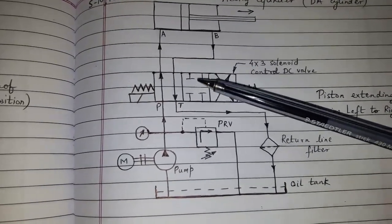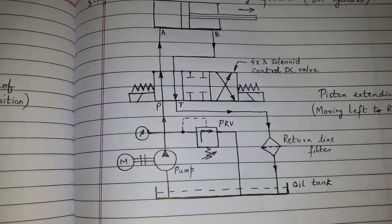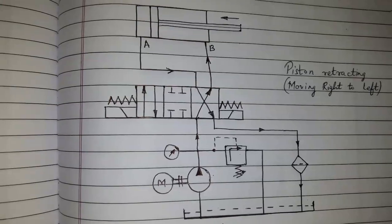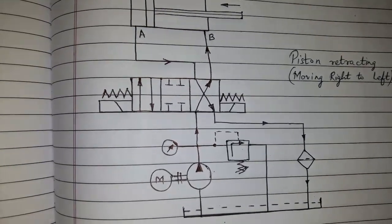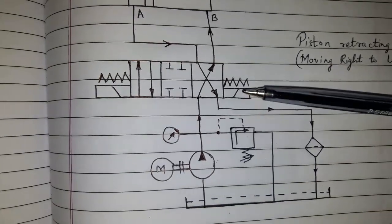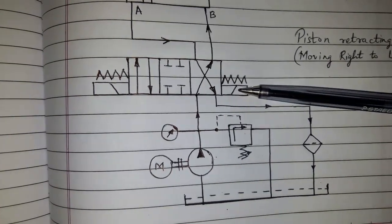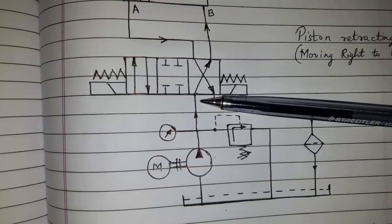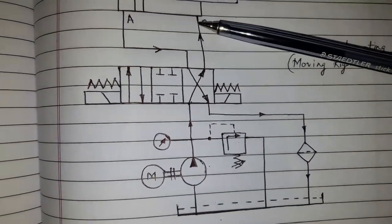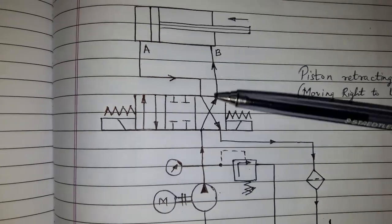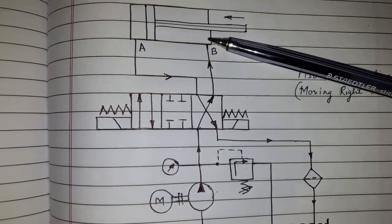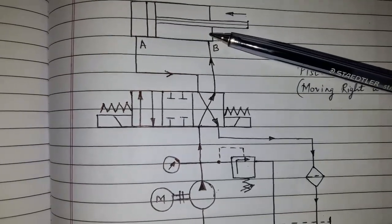Now piston retracting. Now again, the solenoid valve will operate to its second setting. The pressurized oil will be supplied through port B via DC valve.